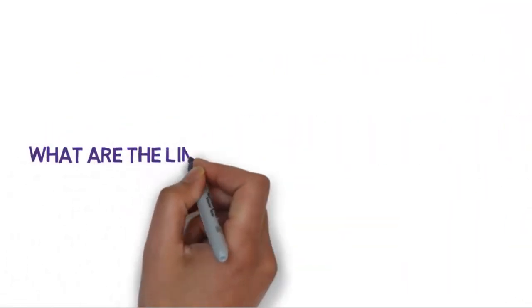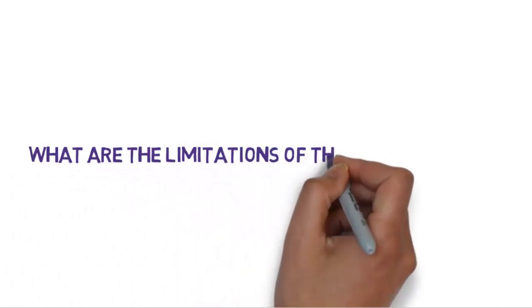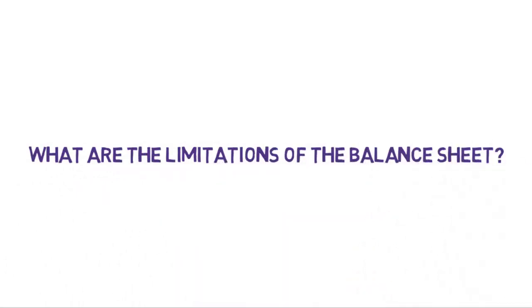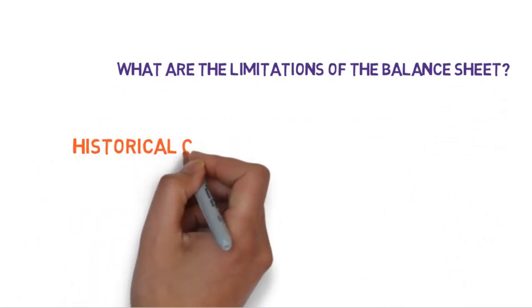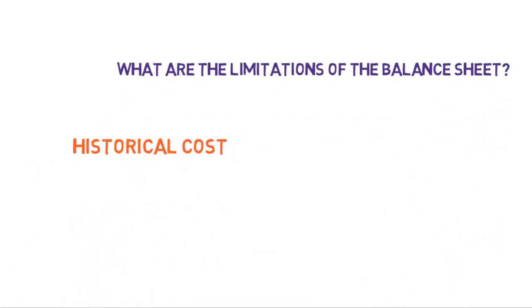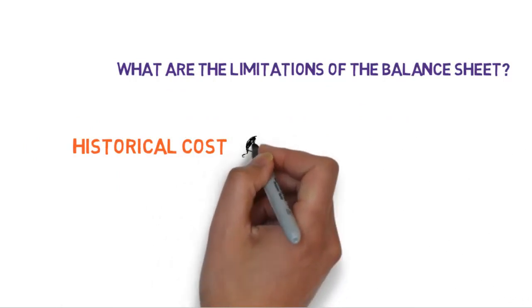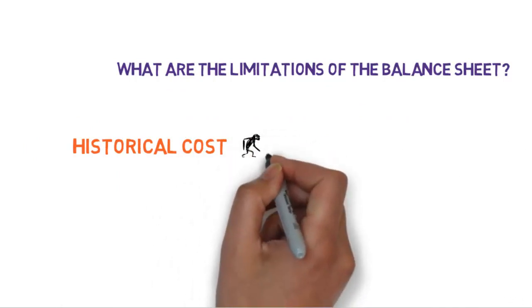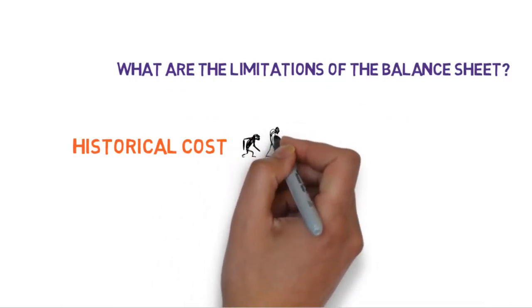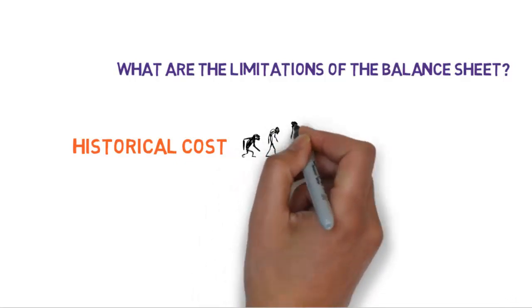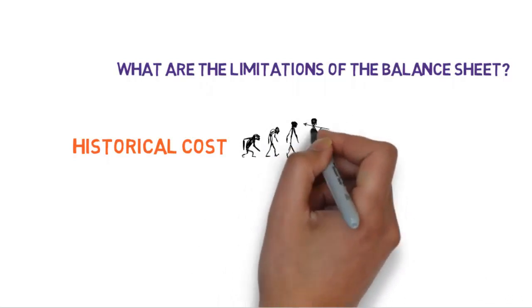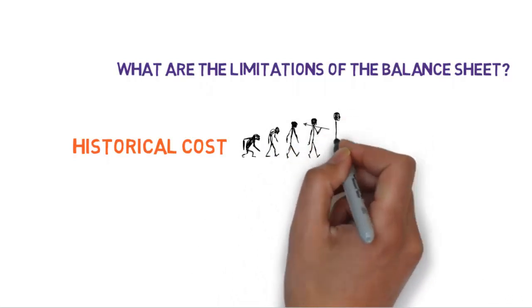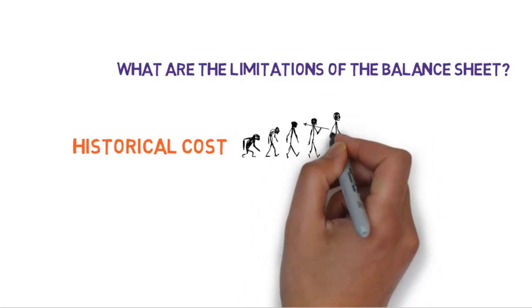The balance sheet also has some limitations. Let's take a look at some of them. Most of the items on the balance sheet are reported at cost. This might not present the situation as it is in the moment. Imagine if a company bought a building in Manhattan 100 years ago for $10,000. Even though it would be worth millions now, it still says $10,000 on the balance sheet.